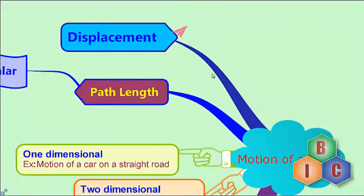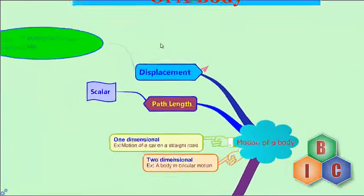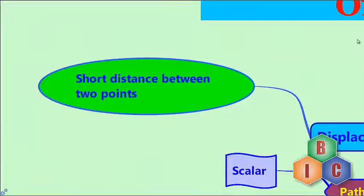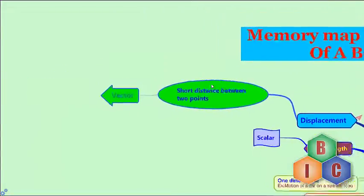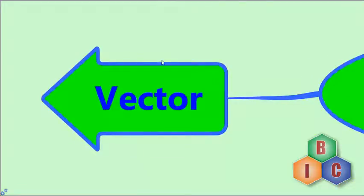The second important physical quantity of motion is displacement. Displacement is the shortest distance between two points. If I have point A and point B, the shortest distance is the straight line connecting them — that is displacement. Displacement has a sense of direction because you must take the shortest route, therefore it is a vector quantity.